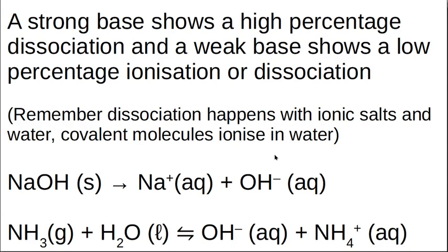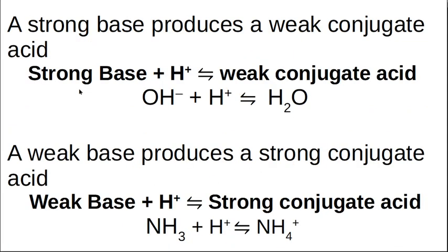Just as with acids, a strong base accepts a proton and produces a weak conjugate acid — the hydroxide ion in sodium hydroxide is a very strong base and doesn't want to give that proton back to water. A weak base will also accept a proton but produces a strong conjugate acid. So: weak base → strong conjugate acid.